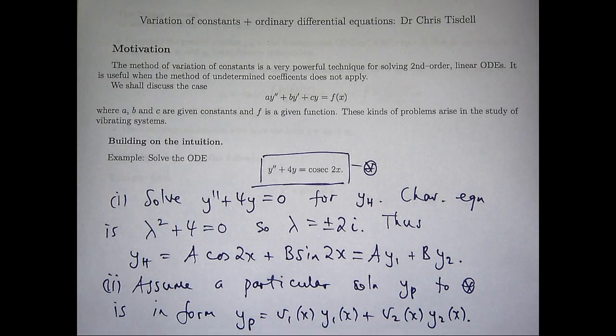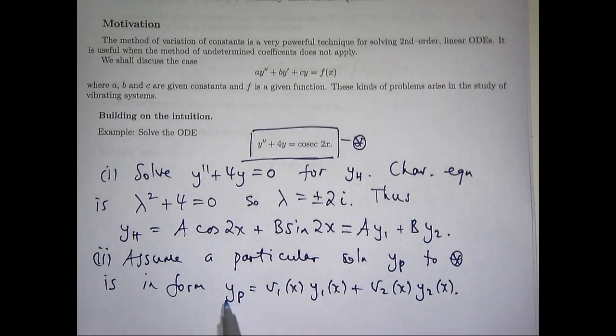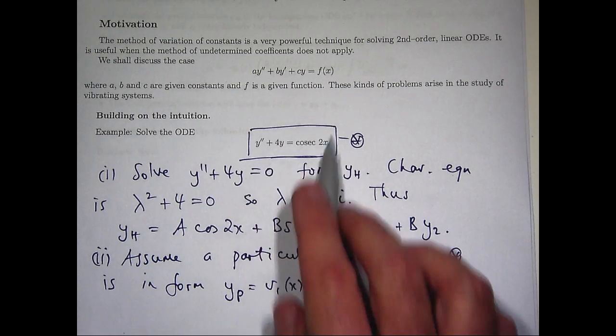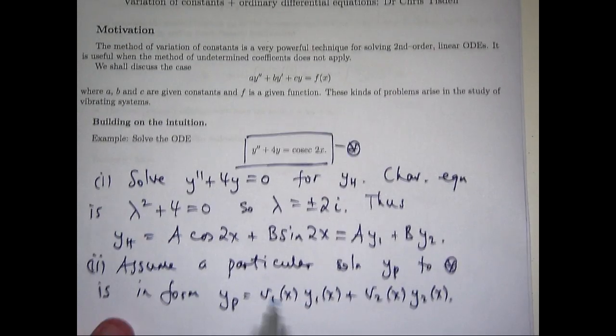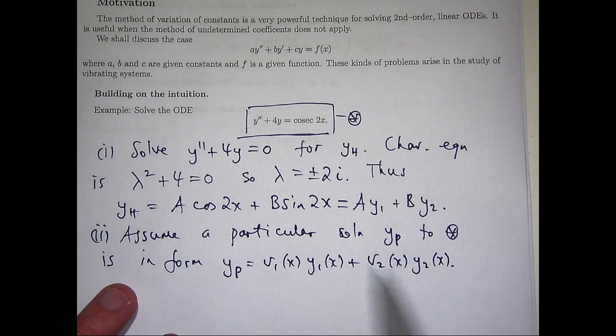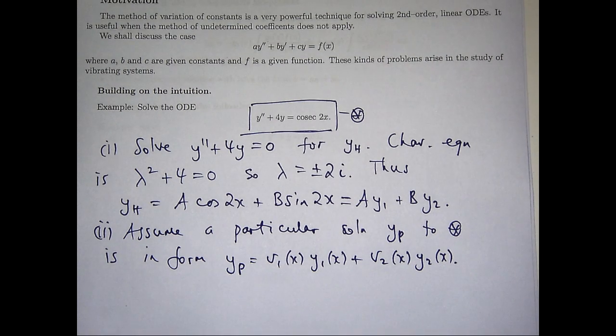We assume a particular solution to star is in the following form: yp = v1(x)y1(x) + v2(x)y2(x). For some functions v1 and v2, we're going to build a particular solution to this problem in the following form. Now you can kind of see where the name variation of constants comes from. These coefficients are not necessarily constant. They're functions.